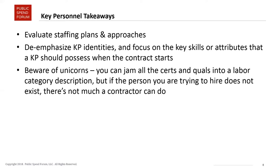Some takeaways on key personnel: when you're evaluating staffing plans and approaches, de-emphasize the identities and focus on the skills and attributes that you want your key personnel to possess. That gives contractors a better idea of the type of profile they need to staff — not necessarily that individual. And when you're writing qualifications and staffing labor categories, be aware of writing for unicorns. You can say what skills, abilities, and certs you want a person to have, but be realistic. You can't get a PhD for an associate's price. It's great to get input from industry about how realistic your labor category descriptions actually are.